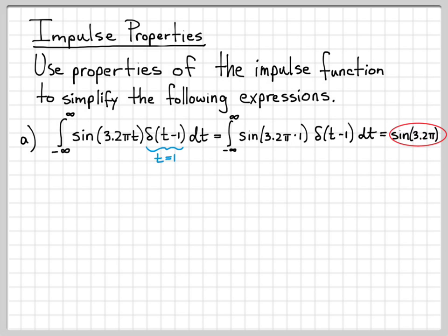And we know when we integrate across an impulse, we get 1. So the net result of this is just the value sine of 3.2π. So that is the result of this integral. Let's do another one,